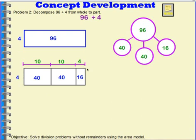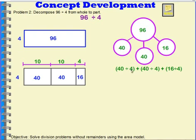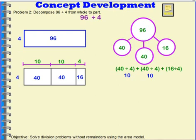So the total length of the top is 10 plus 10 plus 4. 10 plus 10 is 20, plus 4 ones is 24. Going back to the number bond: my whole was 96. I divided the first 40 by 4 and got 10, the second 40 by 4 and got 10, and the 16 by 4 and got 4. So 10 plus 10 plus 4 gives me a quotient of 24.